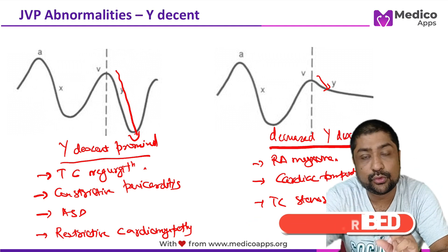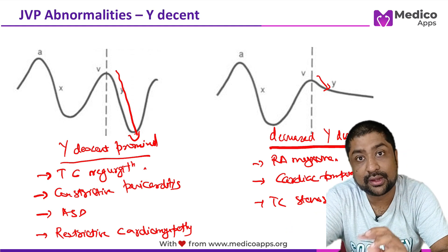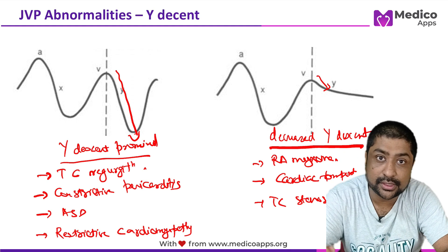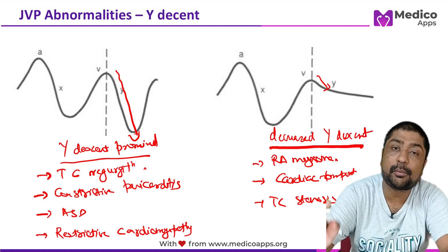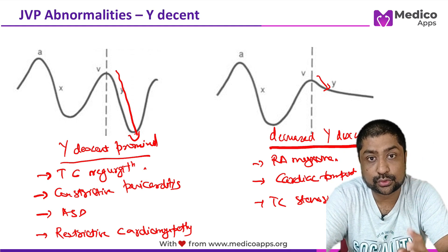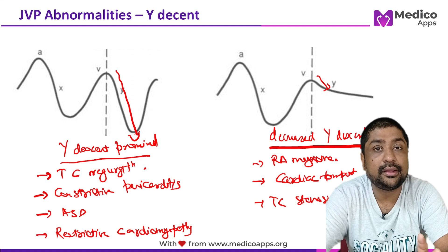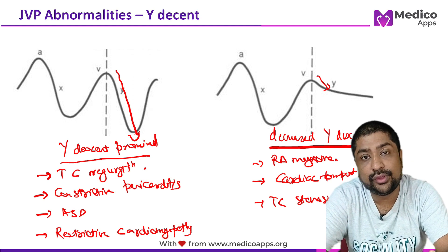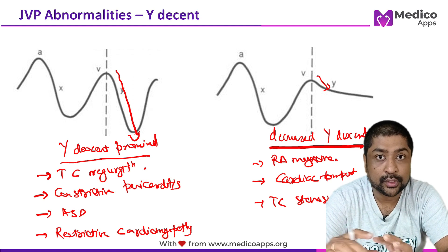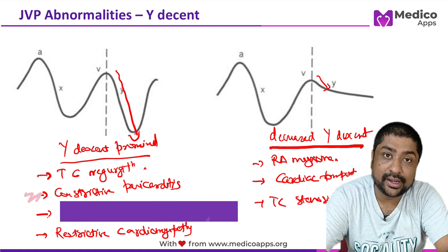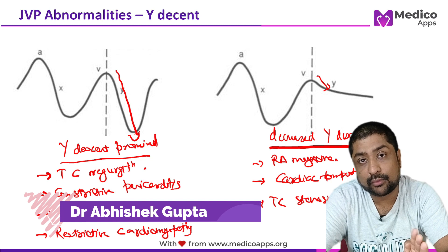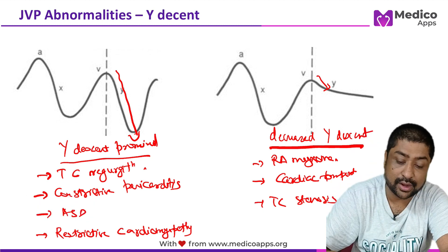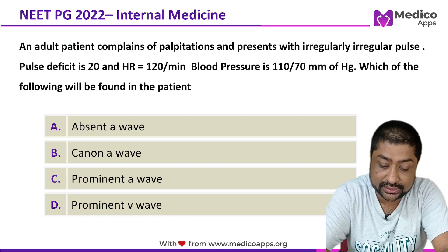To summarize all the conditions: prominent A wave, cannon A wave, absent A wave, A wave equal to V wave, increased V wave, prominent X descent, prominent Y descent, blunted X descent, and blunted Y descent — all these causes you need to remember. They can be given as image-based questions, and if you understand the concepts, you will be able to eliminate or answer the question easily.